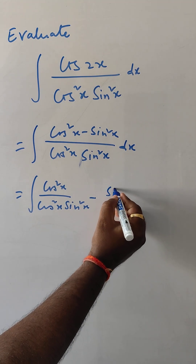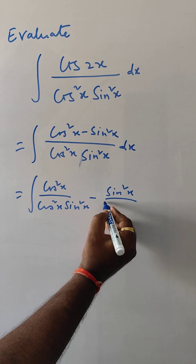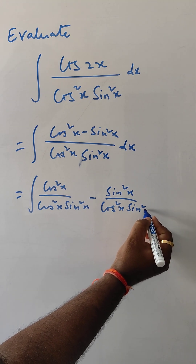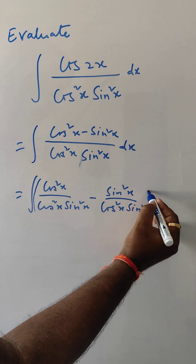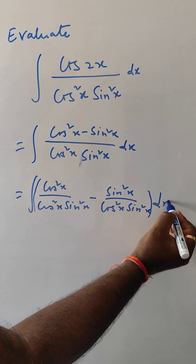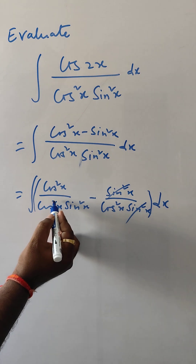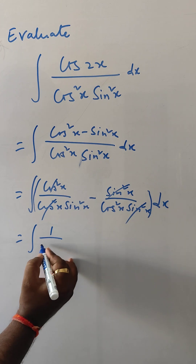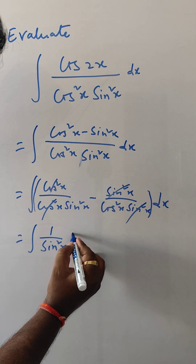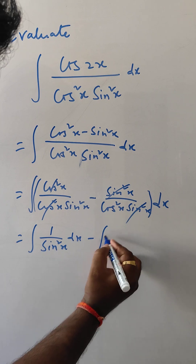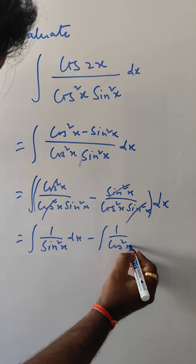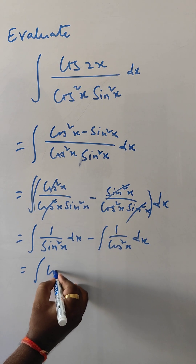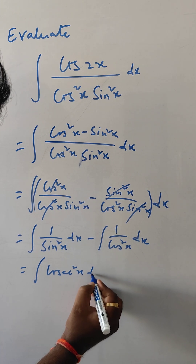So here we can write cos²x · cos²x · sin²x, minus sin²x · cos²x · sin²x, dx. Since this sin²x part and this cos²x part are treated as constants, we can write 1/sin²x dx and 1/cos²x dx.